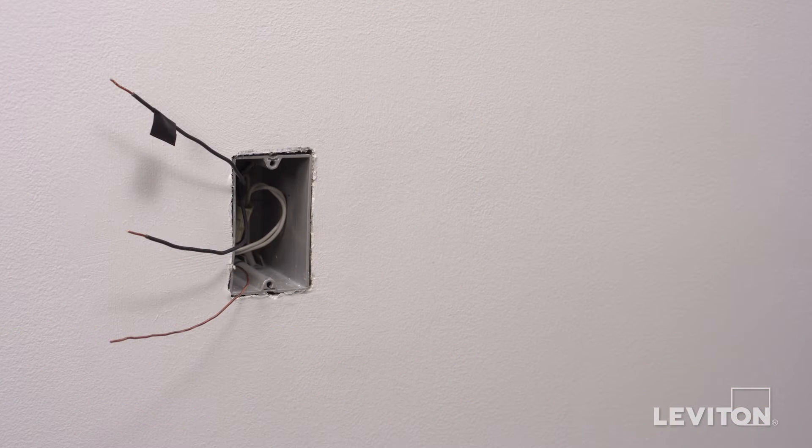In this example, in the wall box there is one black wire which is the hot, a bare copper wire which is the ground, and a black wire which is the load wire. Keep in mind, the color of the wires can vary. The hot wire may be black or red. The ground wire could be green or bare copper. If you're unsure, contact an electrician.